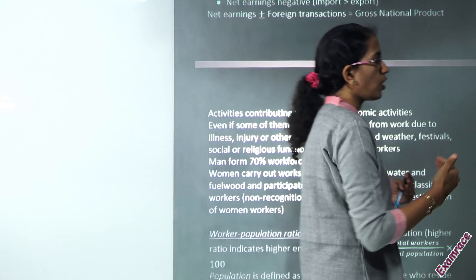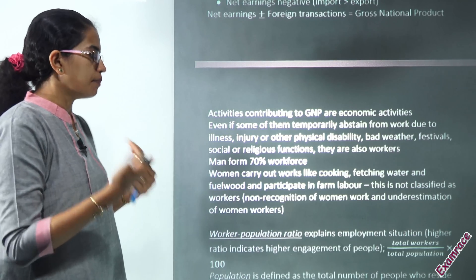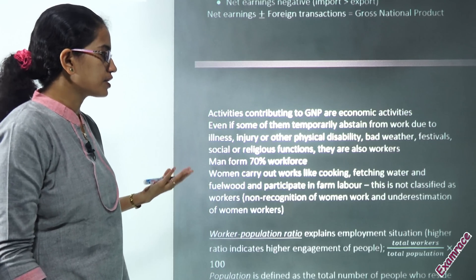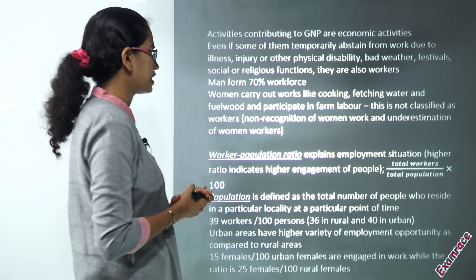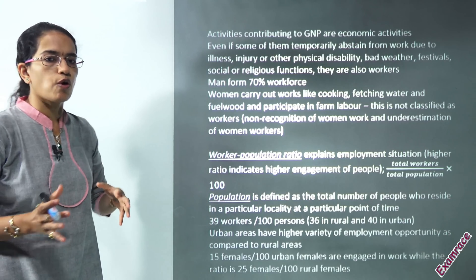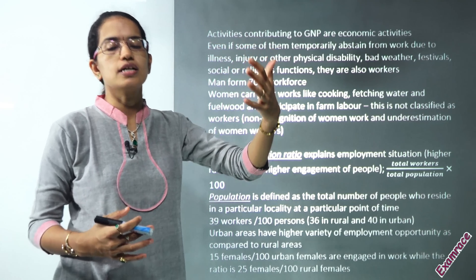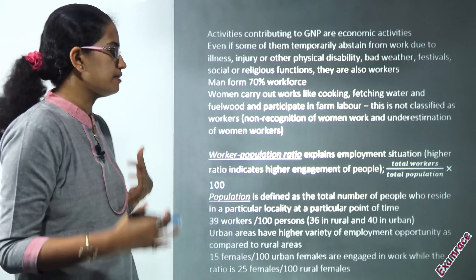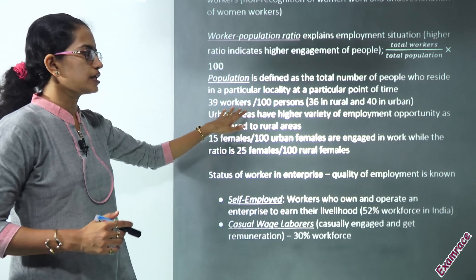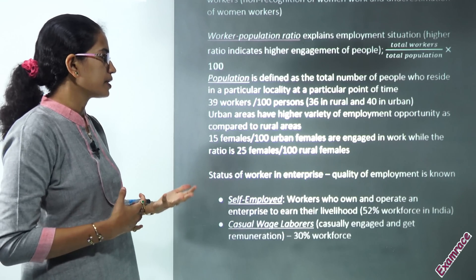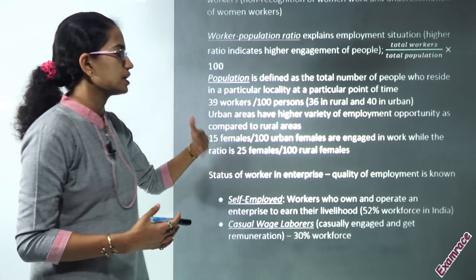We also talk about women employed in household work — cooking, fetching water, burning fuelwood, participating in farm labour — which is not counted towards the real workforce. Of the real workforce, 70 percent accounts for the male population. The worker population ratio is calculated as total workers divided by total population. We have around 39 workers per 100 persons, varying from 36 in rural to 40 in urban areas. However, for female employment it's a reverse scenario — in urban areas only 50 females per 100 urban females are employed, while in rural areas it is 25.